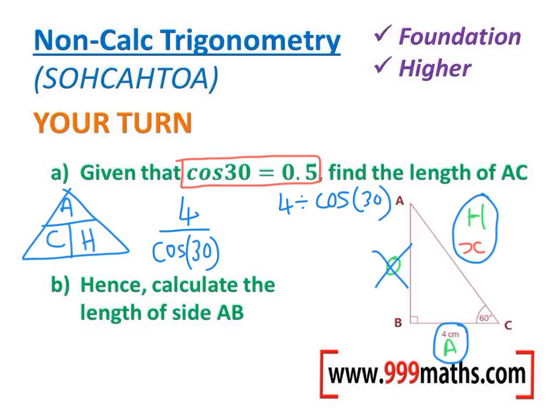Cos of 30, in the question, is given to me, it's 0.5. So what I'm doing is doing 4 divided by 0.5.